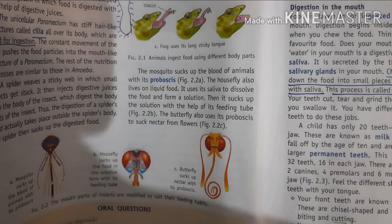Till now we have discussed how the nutrition process takes place in hydra, amoeba, paramecium, spiders, and mosquitoes. In the next class, we are going to discuss the nutrition process of humans and ruminants.